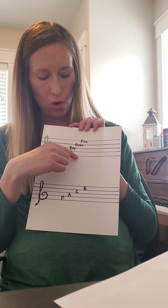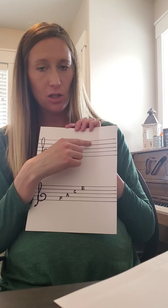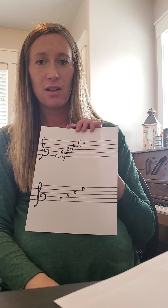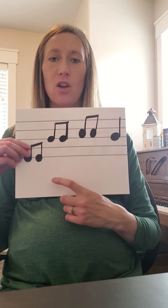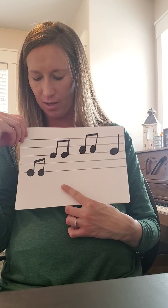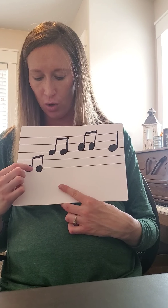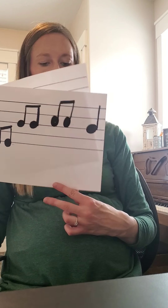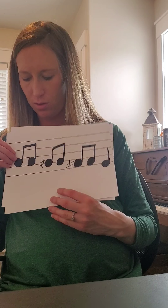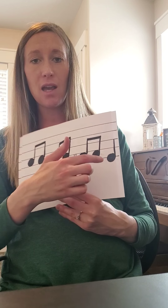Solfege goes: Do, Re, Mi, Fa, Sol, La, Ti, Do. We're going to sing Twinkle Twinkle one more time using solfege, starting on our Do which is an E: Do, Do, Sol, Sol, La, La, Sol. Fa, Fa, Mi, Mi, Re, Re, Do.